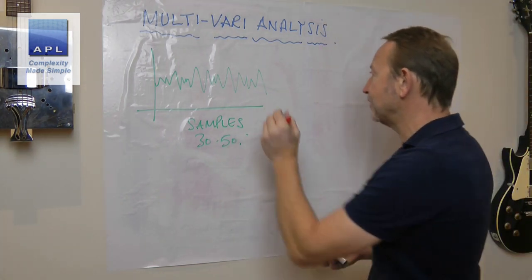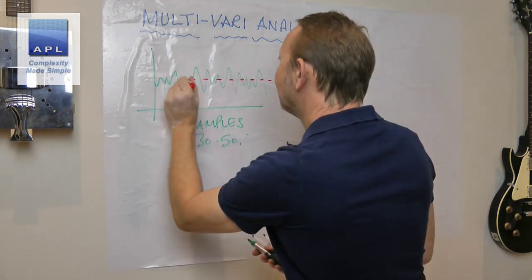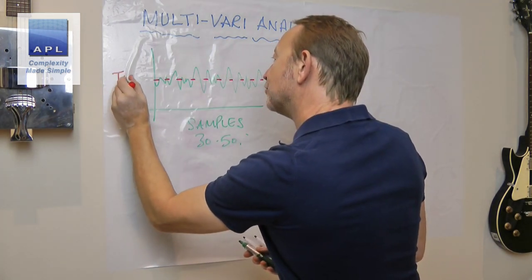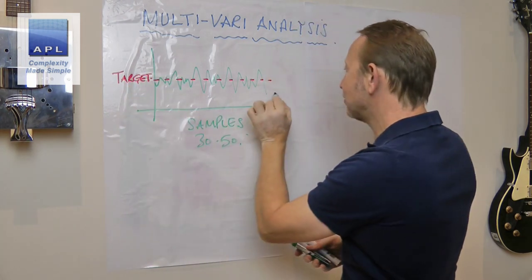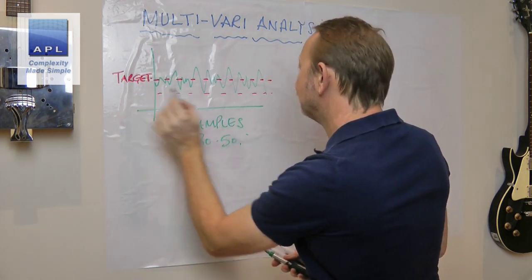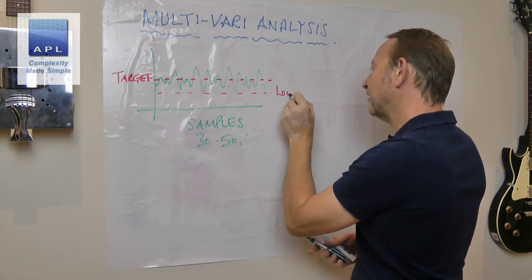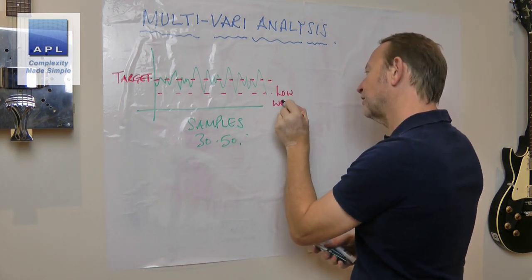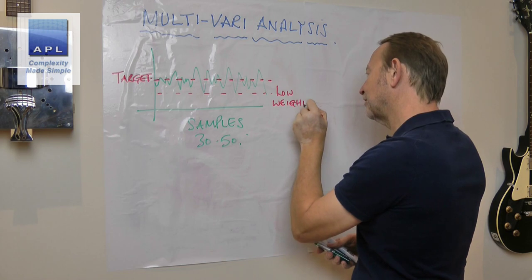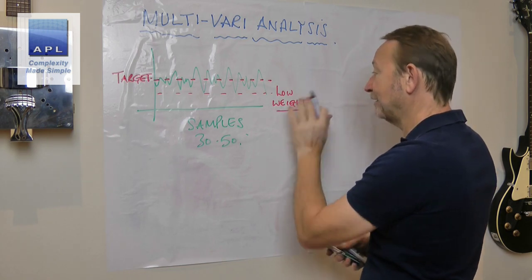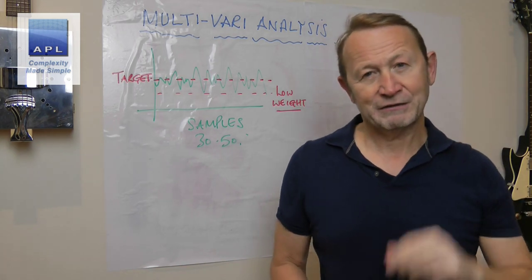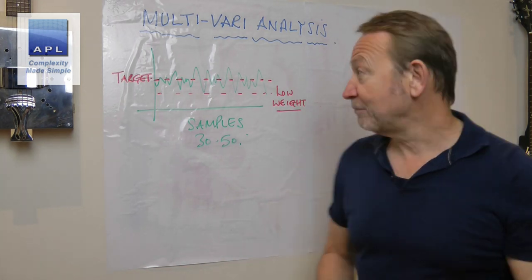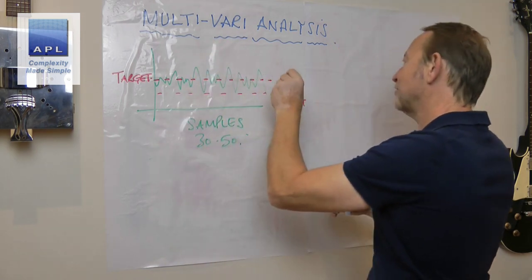Obviously this customer is trying to hit a target, and as well as that, they're trying to keep away from the low weight region because usually that's what triggers legal action. You break the law if you sell goods that are under the weight on the wrapper.